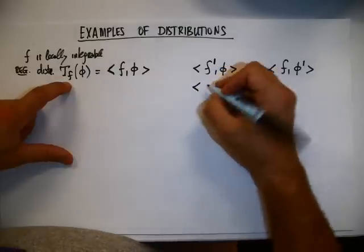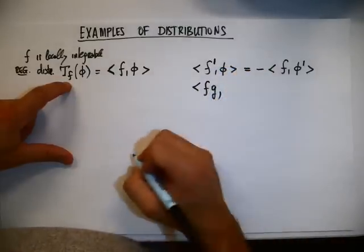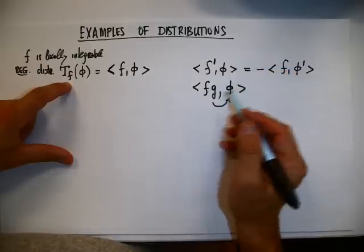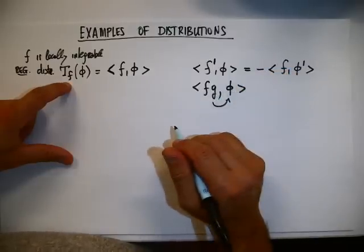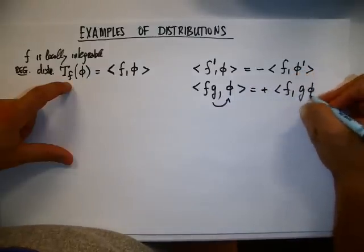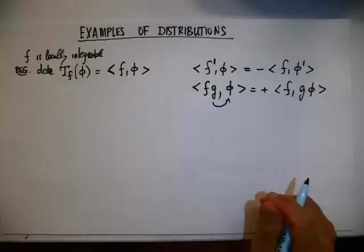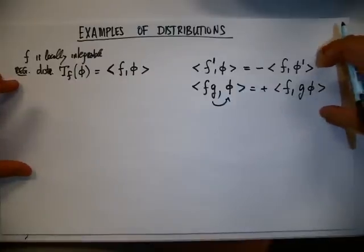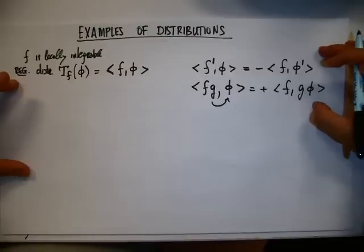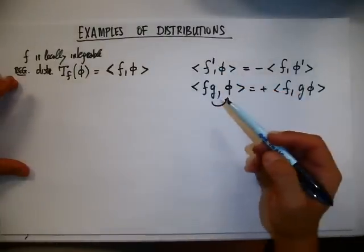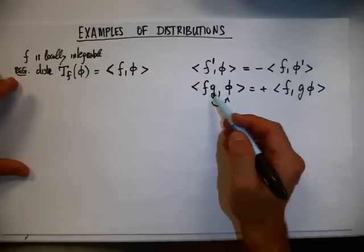Not only that, but we also showed that if we have the product of two regular distributions, we can bring any of the two functions — as long as they are regular — on the other side of the test function, and write it as plus f, g times φ. We showed this for regular functions, or regular distributions. Then we say that the same is also true, and we use these two results as a definition for the derivative of a singular distribution and the product of a regular distribution and a singular distribution.